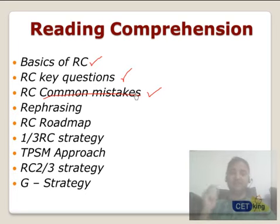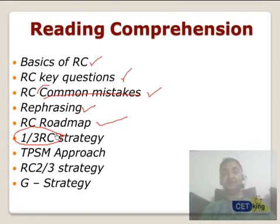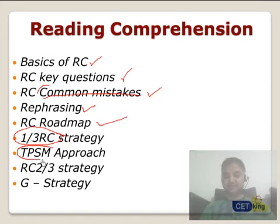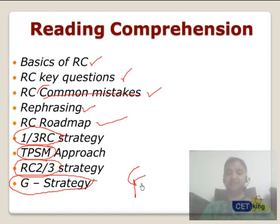Let me rephrase: if you make any mistakes in RC, they have to be out of these 5 mistakes which we commonly discuss here. Parallels, rephrasing your RC, RC roadmap, and the 1.3 RC strategy — a brilliant strategy used to answer all the inference-based questions like main idea of the passage, purpose of the passage. T.S.P.M. is another strategy for solving various RC questions. RC 2.3 and 2 by 3 strategy is one more thing. Last is the CDTKink G strategy — basically not the genius student strategy but the grieve student strategy. Grieve means the poor student.